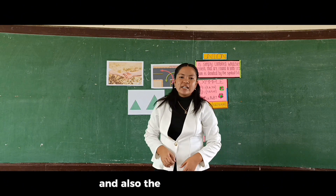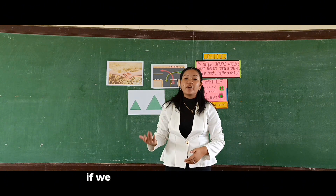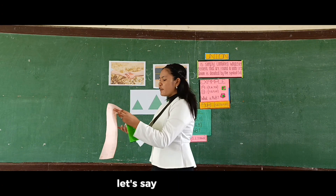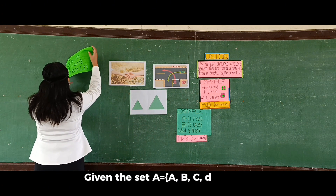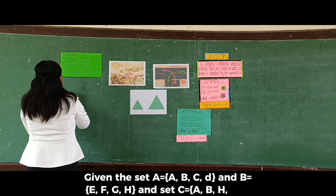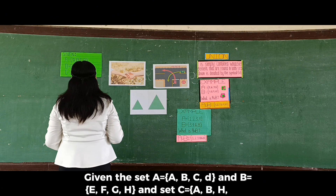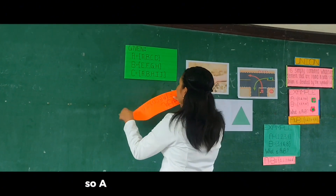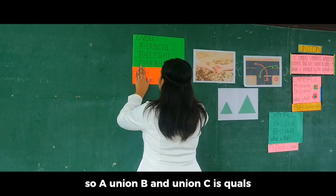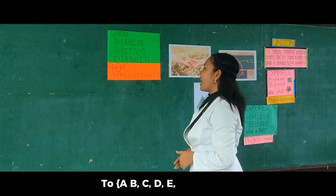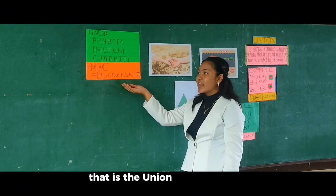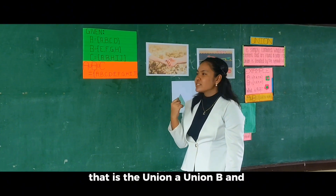The same situation applies if we are going to find the union of the alphabet. For example, given set A = {A, B, C, D}, set B = {E, F, G, H}, and set C = {C, A, B, H, I, J}. So A union B union C = {A, B, C, D, E, F, G, H, I, J}. That is the union of A, B, and C.